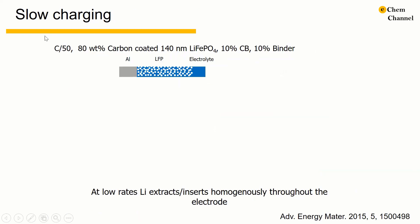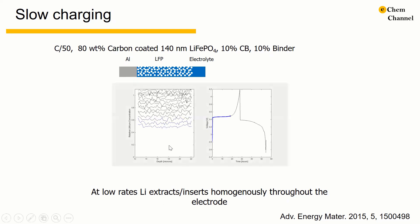Here shows an example when the electrode is charging and discharging very slowly. The electrode is made of 80% of LFP, 10% of carbon black, and 10% of binder.